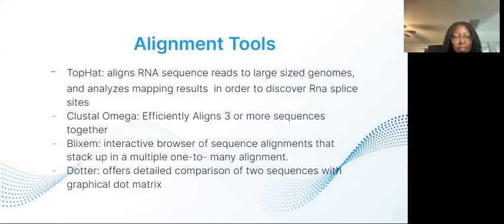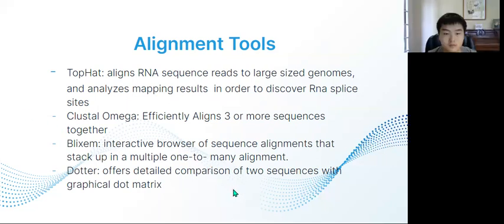Here are a few of the alignment tools and how they work. TopHat aligns RNA sequence reads to large-sized genomes, then analyzes the results in order to identify RNA splice sites. Clustal Omega quickly and effectively aligns three or more sequences. Blixem is an interactive browser of sequence alignments that sets up multiple alignments, and Dotter is an alignment tool that uses a graphical dot matrix to offer detailed comparison of two sequences.